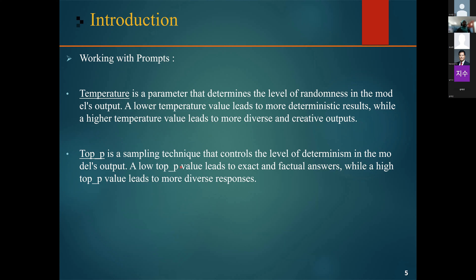Another parameter is Top-P, which controls the level of determinism in the model's response generation. If we're looking for exact and factual answers, we keep it low, and if we're looking for more diverse responses, we increase it to a higher value. It's also worth noting that the result depends on the version of the language model we are using, not just the parameters.